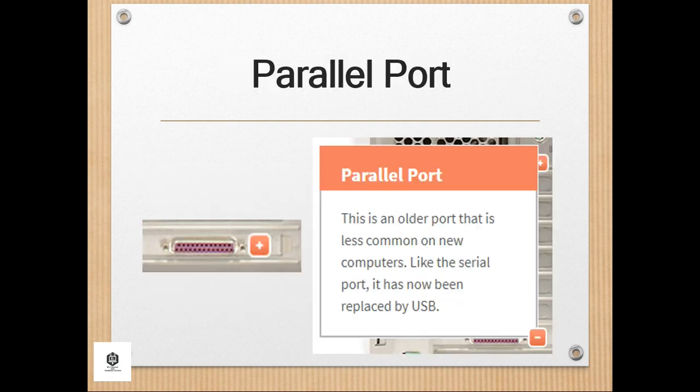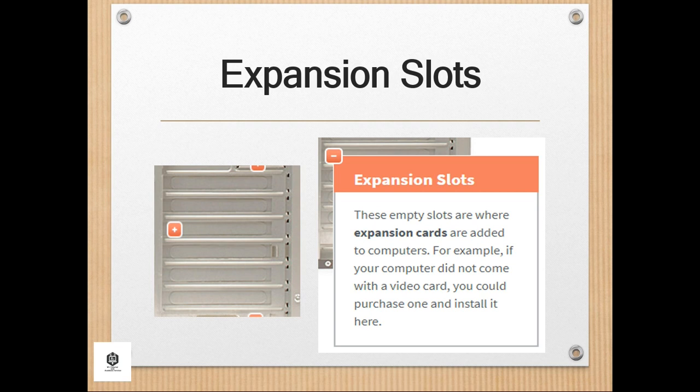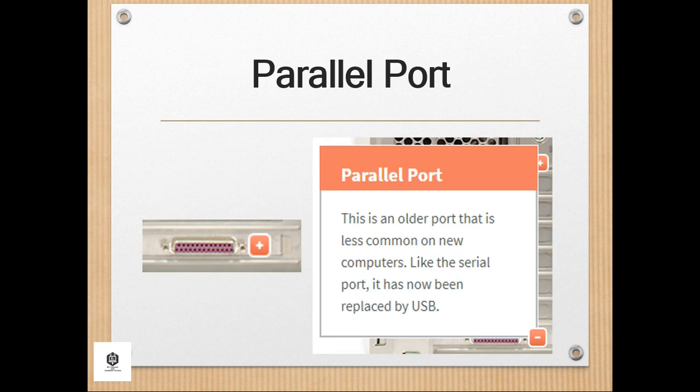Next are the expansion slots. These empty slots are where expansion cards are added to a computer — for example, if your computer did not come with a video card, you could purchase one and install it here. There is also the parallel port, which is an older port less common on new computers; like the serial port, it has been replaced by USB.